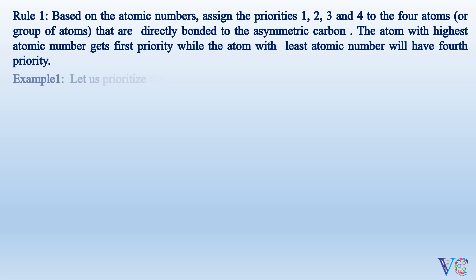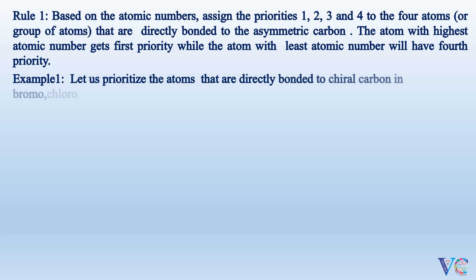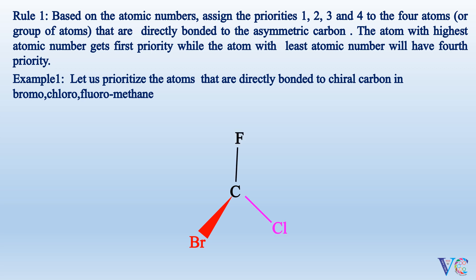Example 1: Let us prioritize the atoms that are directly bonded to the chiral carbon in bromochlorofluoromethane. The chiral carbon is bonded to bromine, chlorine, fluorine, and hydrogen. The atomic number of bromine is 35, chlorine is 17, fluorine is 9, and hydrogen is 1. So bromine gets the first priority, while hydrogen gets fourth priority. Chlorine and fluorine get second and third priorities, respectively.